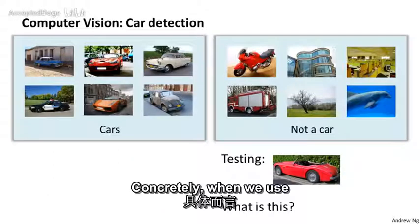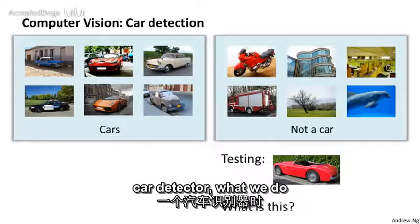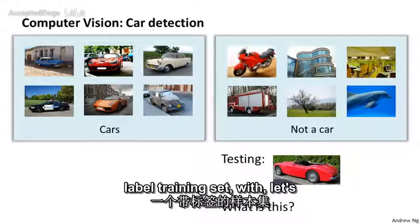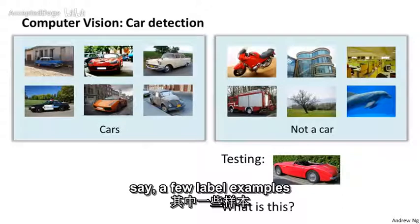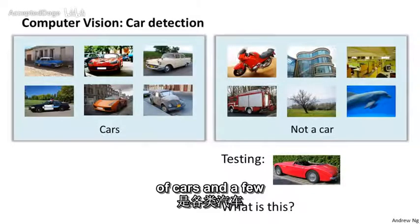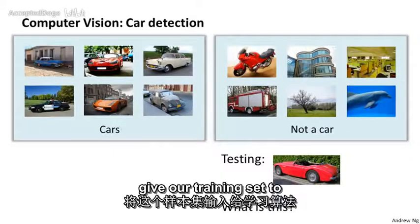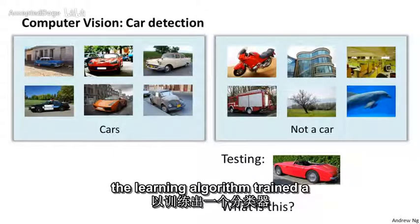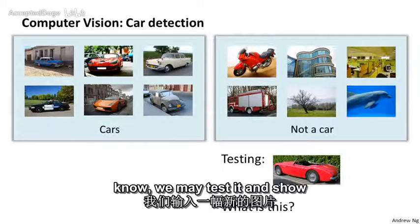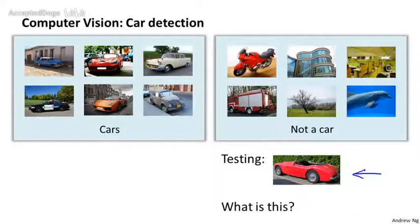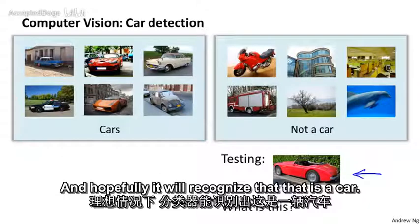Concretely, when we use machine learning to build a car detector, what we do is we come up with a labeled training set with a few labeled examples of cars and a few labeled examples of things that are not cars. Then we give our training set to the learning algorithm, train a classifier, and then we may test it and show a new image and ask, what is this new thing? And hopefully it'll recognize that that is a car.